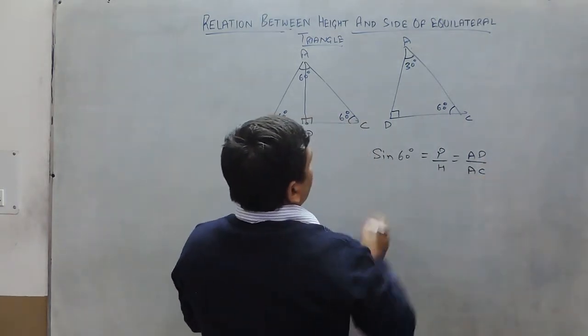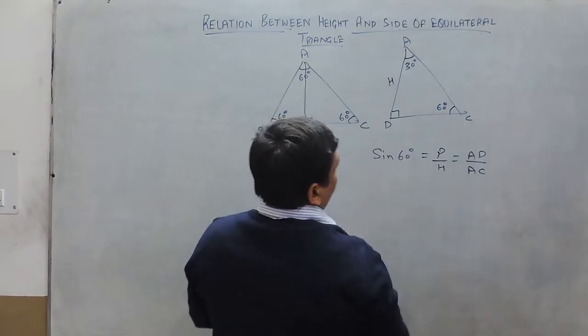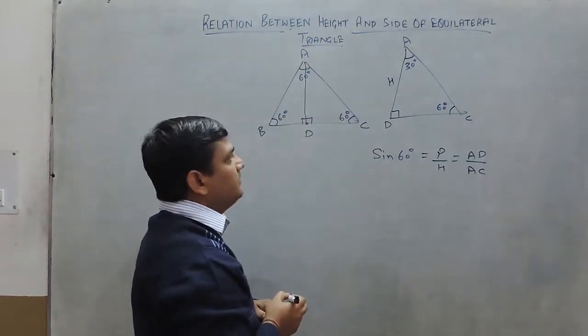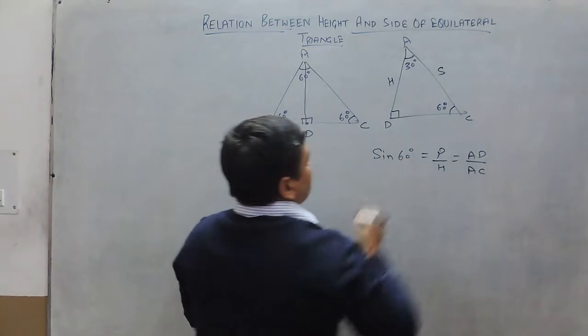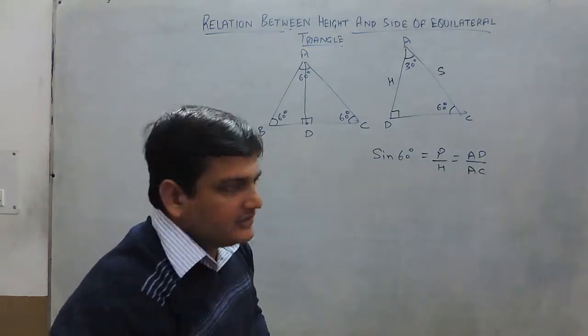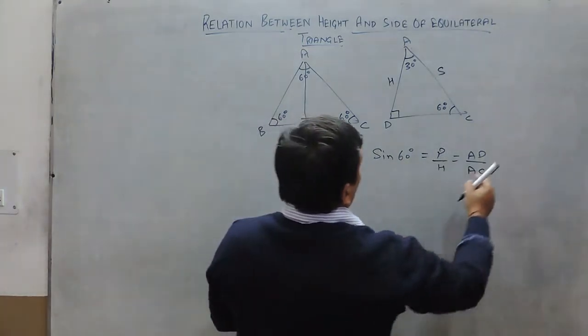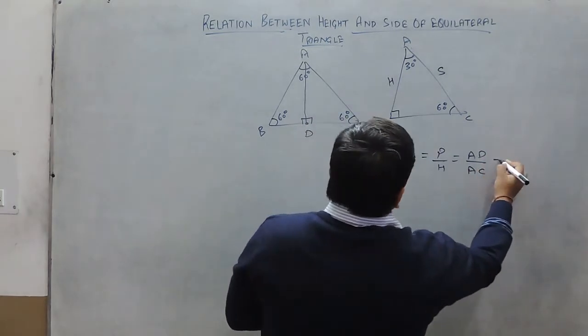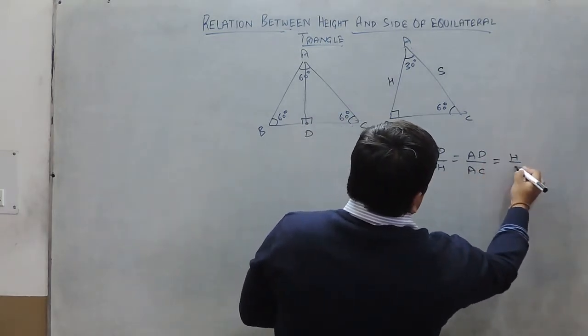Therefore, AD is the height here, height of triangle ABC. And AC is the side of equilateral triangle. Therefore, AD upon AC equals height upon side.